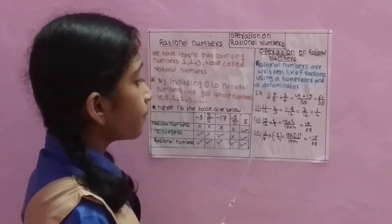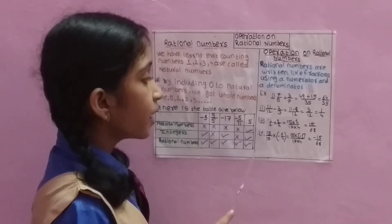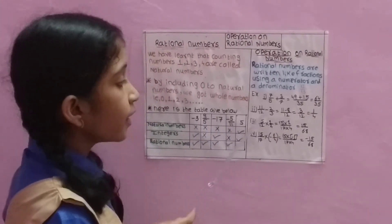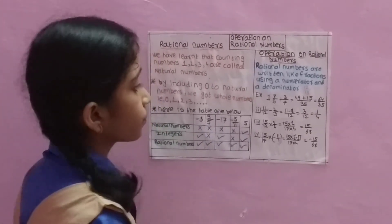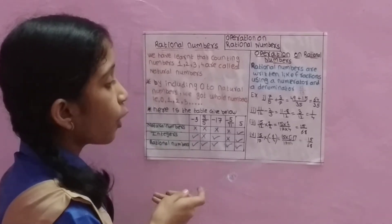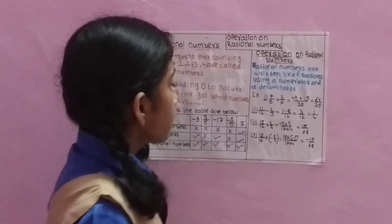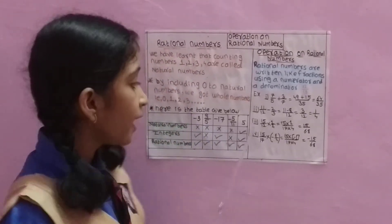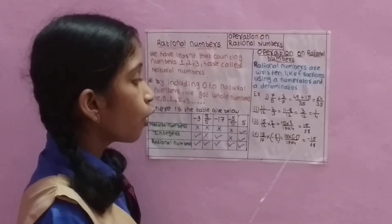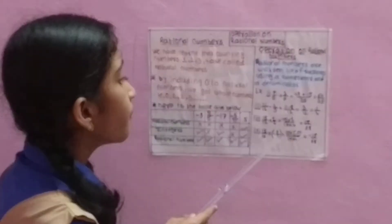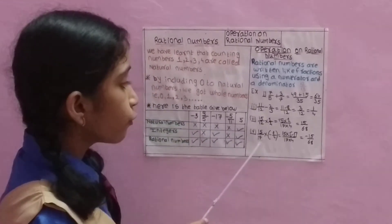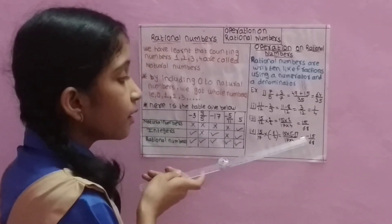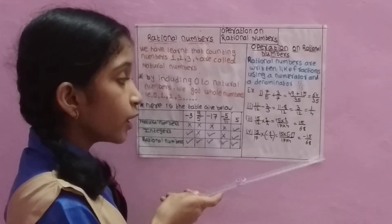Third example: 15 multiplied by 1 upon 4, giving 15 upon 16. Then 15 upon 16 minus 1 upon 4 — multiply cross to get 15 minus 15 upon 16.